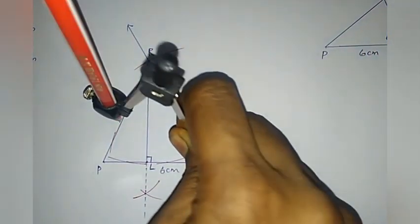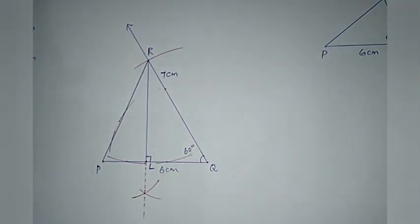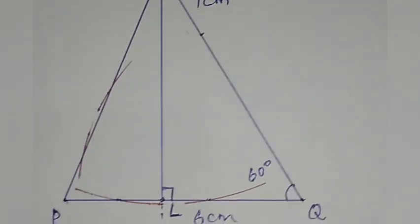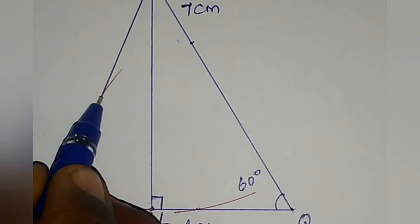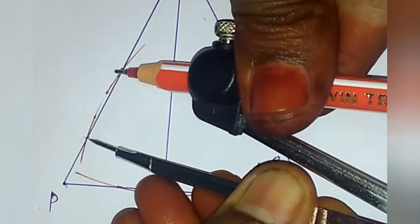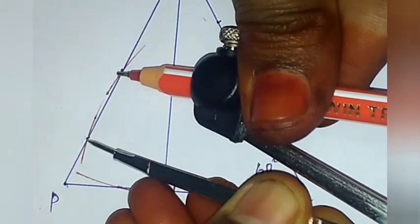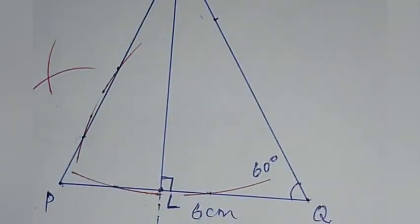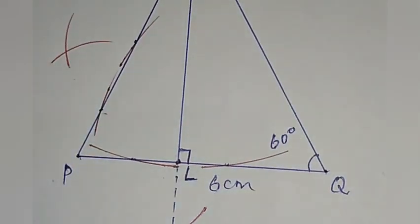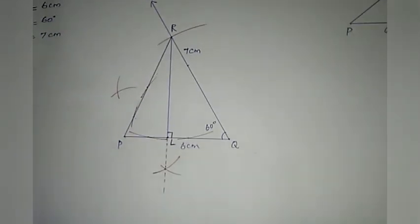The two arcs are cut. Measure the distance using the compass. Mark two new points outside the triangle, cut one arc at the first point and another arc at the second point. Connect Q to the new point. This gives the second altitude. The two altitudes will meet at the orthocenter.